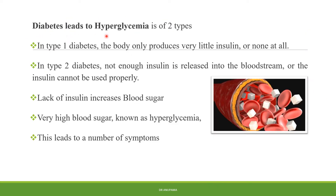Diabetes leads to hyperglycemia, and this is of two types: type 1 diabetes and type 2 diabetes. In type 1 diabetes, the body only produces very little insulin or none at all. In type 2 diabetes, not enough insulin is released into the bloodstream, or the insulin cannot be used properly by the body. Lack of insulin increases the blood sugar.